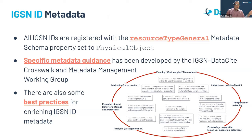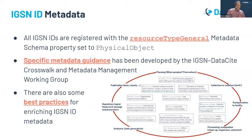IGSN ID metadata is encoded in the DataCite metadata schema. An important thing to note is that all IGSN IDs are registered with the resource type general schema property set to 'physical object.' We have worked with the IGSN organization to develop specific metadata guidance and also created some best practices for enriching IGSN IDs.